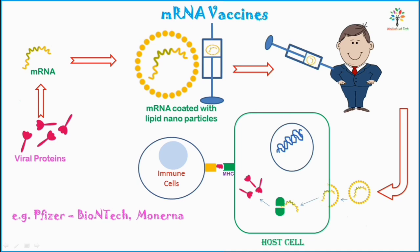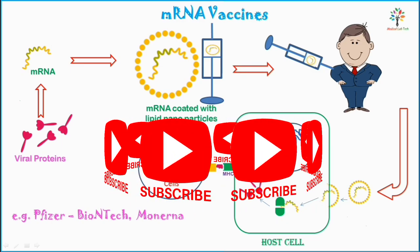mRNA vaccines are a very recent technology. Examples include Pfizer-BioNTech and Moderna, which are used against COVID-19. No matter what type of vaccine you are taking, all have the same goal: to train the immune system to recognize and respond to bacteria and viruses. So this is all for today. In my next video, I am going to explain the detailed principles of Covaxin, Covishield, Pfizer, Moderna, and Sputnik V. If you do not want to miss that video, please stay tuned, and please like, share, and comment. Those who are new to my channel, please subscribe. Thank you.